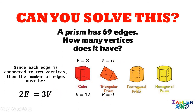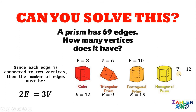For a pentagonal prism, we have 10 vertices and 15 edges: 2 times 15 is 30, and 3 times 10 is also 30. For a hexagonal prism, we have 12 vertices and 18 edges: 2 times 18 gives us 36, and 3 times 12 is also 36.